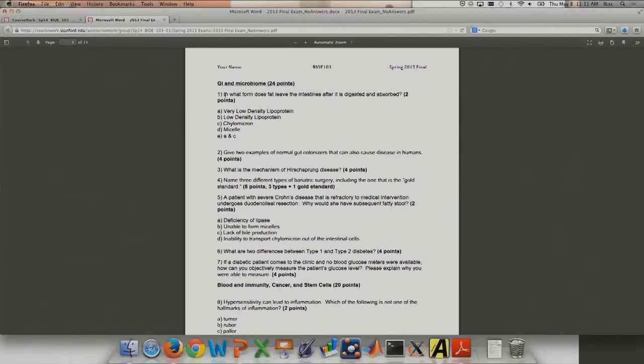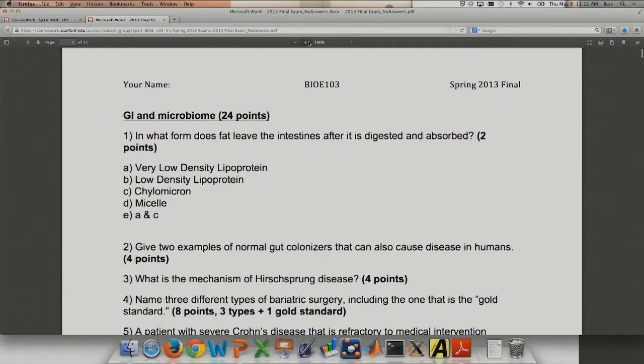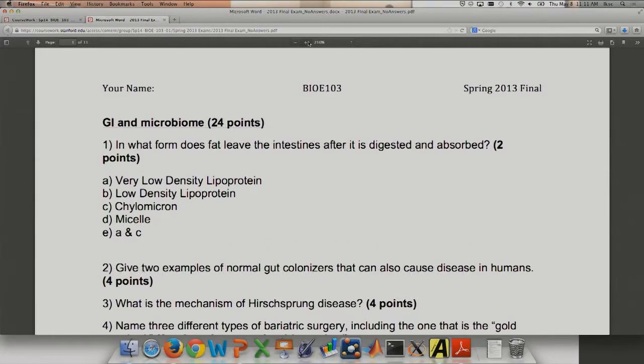So let's start with GI and microbiome. In what form does fat leave the intestines after it's digested and absorbed? This was on the slides. Chylomicron, that's C. So there's not much I can explain about this except for the fact that that's how digestion happens.